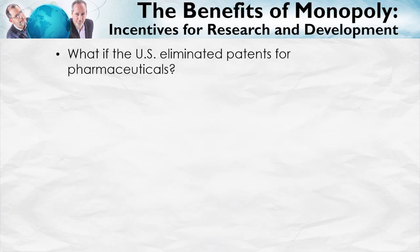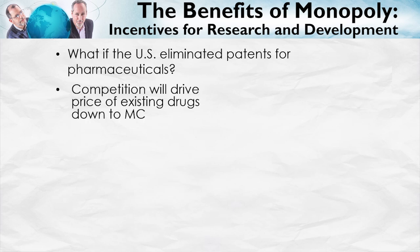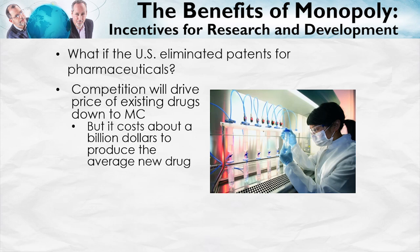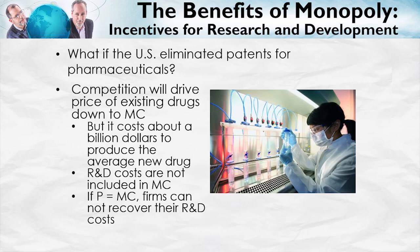Some monopolies, however, do have countervailing benefits. Consider what would happen if the US eliminated patents for pharmaceuticals. Competition would drive down the price of existing drugs to marginal cost, as happens today as soon as patents expire — usually within 10 to 15 years after the drug first enters the market. But it costs about a billion dollars to bring the average new drug to market, and R&D costs are not included in marginal cost. It costs about a billion dollars to create the first pill; 50 cents to create the second. If price were quickly pushed down to marginal cost, firms would not be able to recover their R&D costs, and the result would be fewer new drugs.